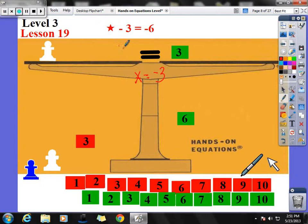And if star equals negative 3, let's go ahead and do our check. And our check would be negative 3 minus 3 equals negative 6. And let's see here. Negative 3 minus a positive is actually going to be plus a negative. And that leaves me with negative 3 plus negative 3. So my check would be negative 6, check, negative 6.